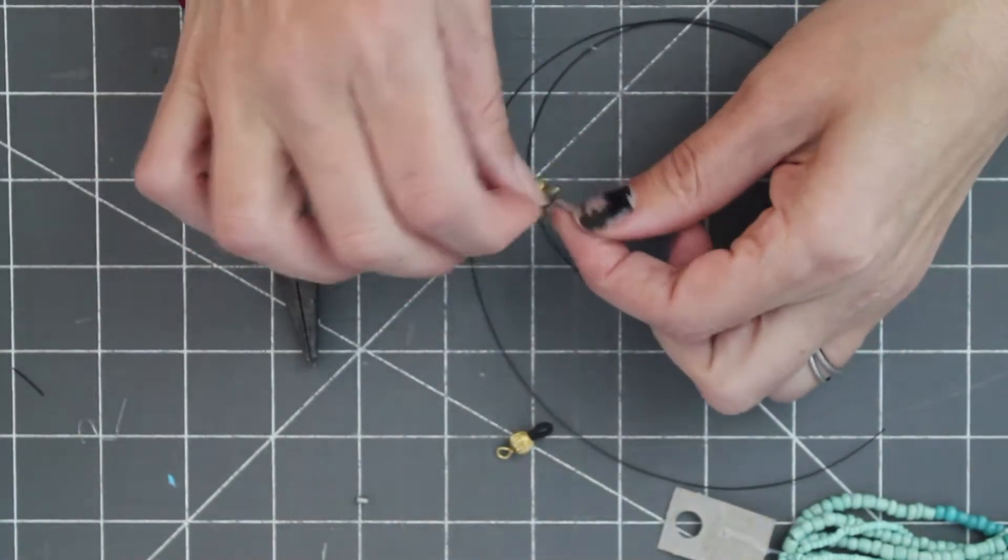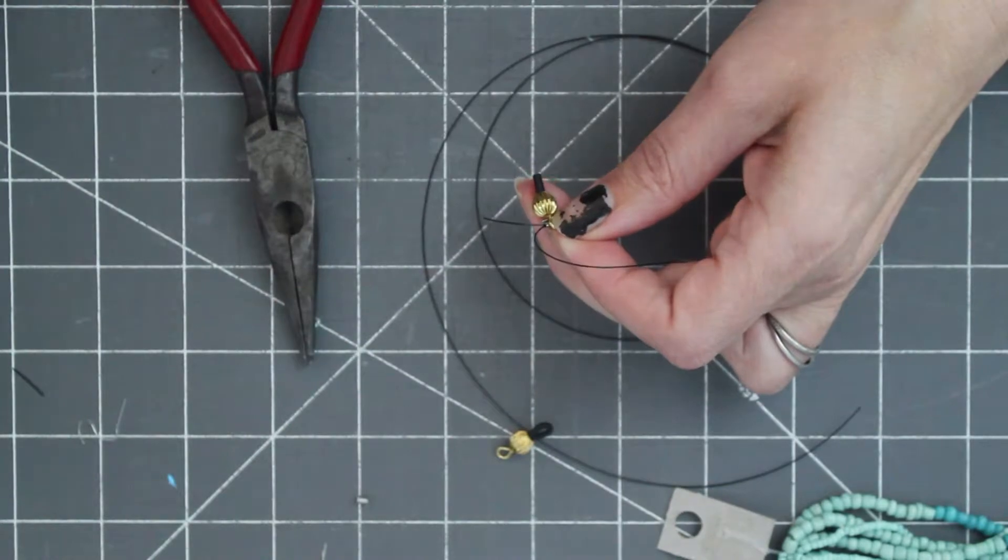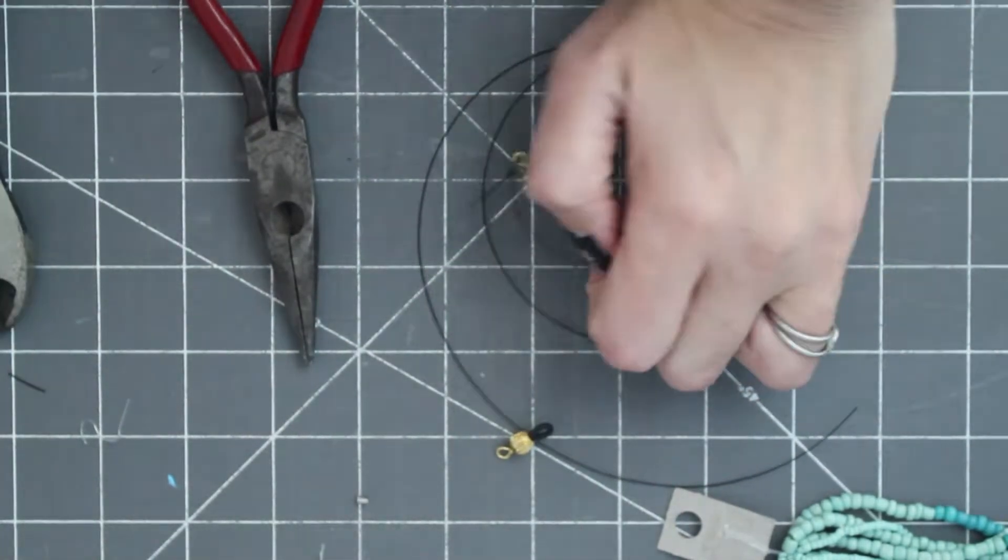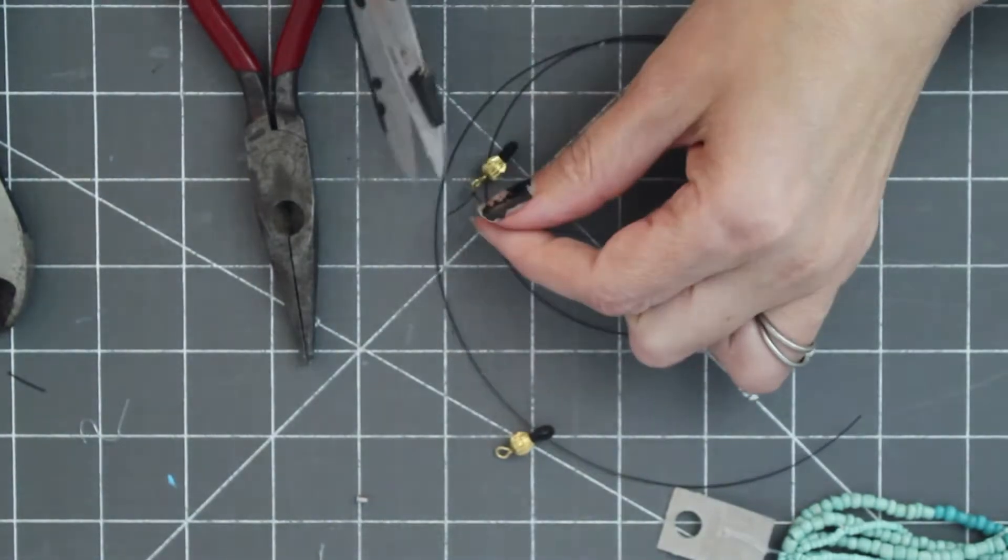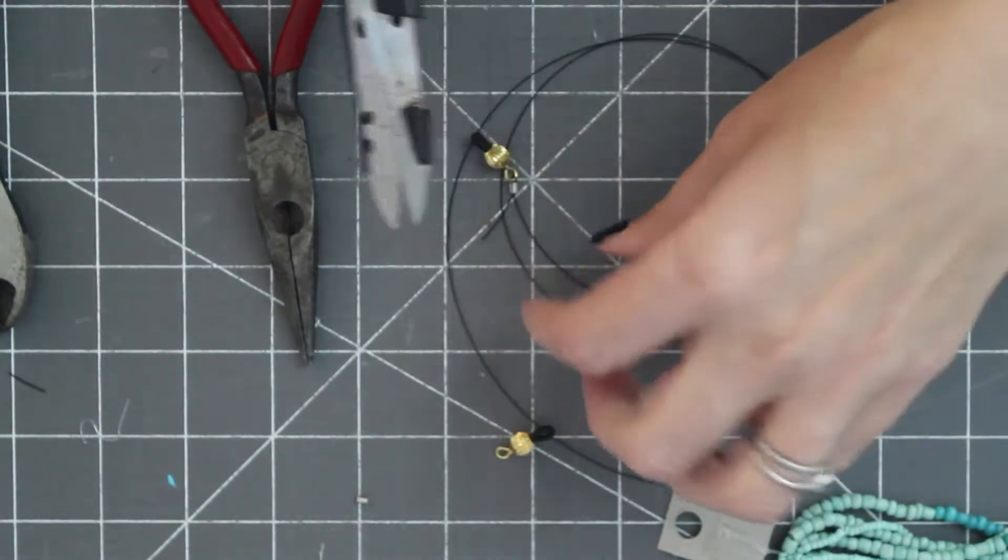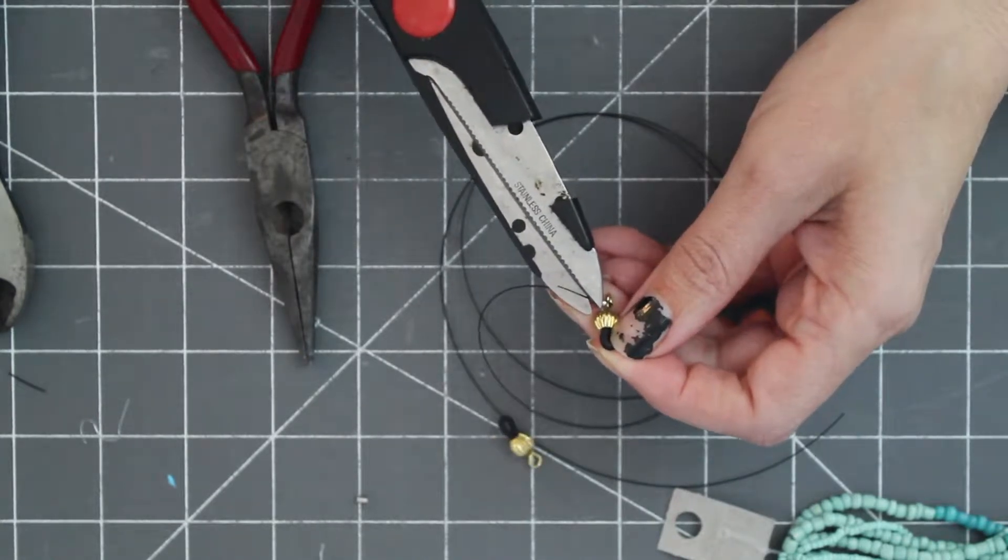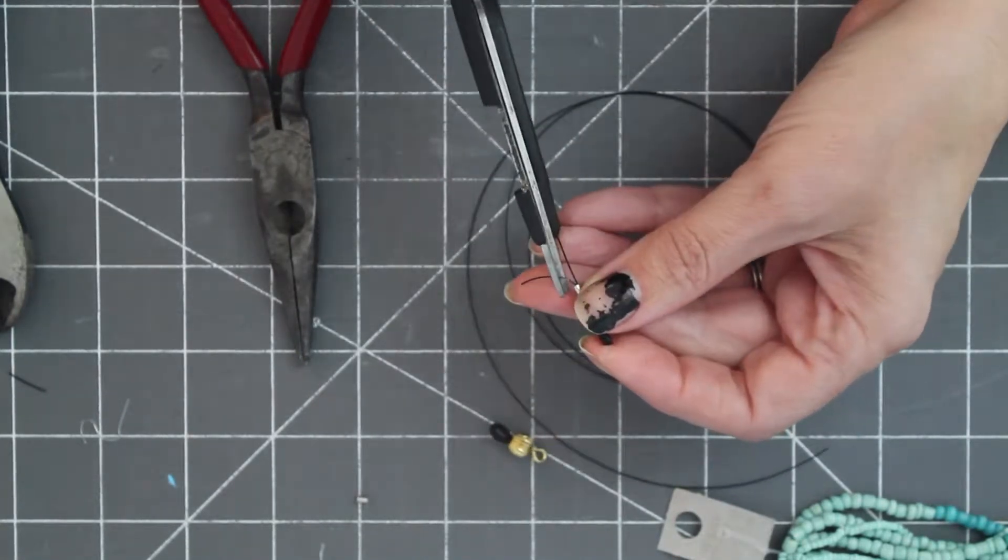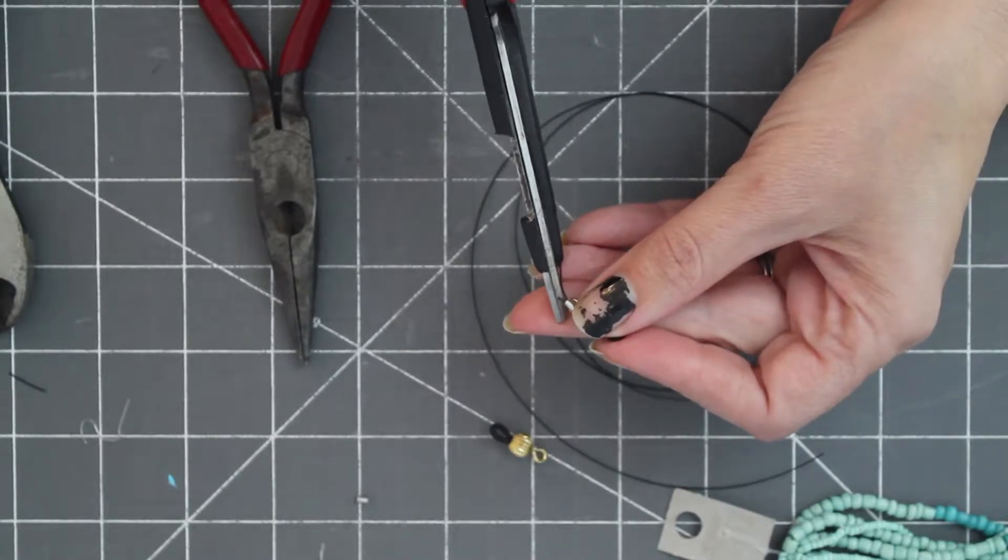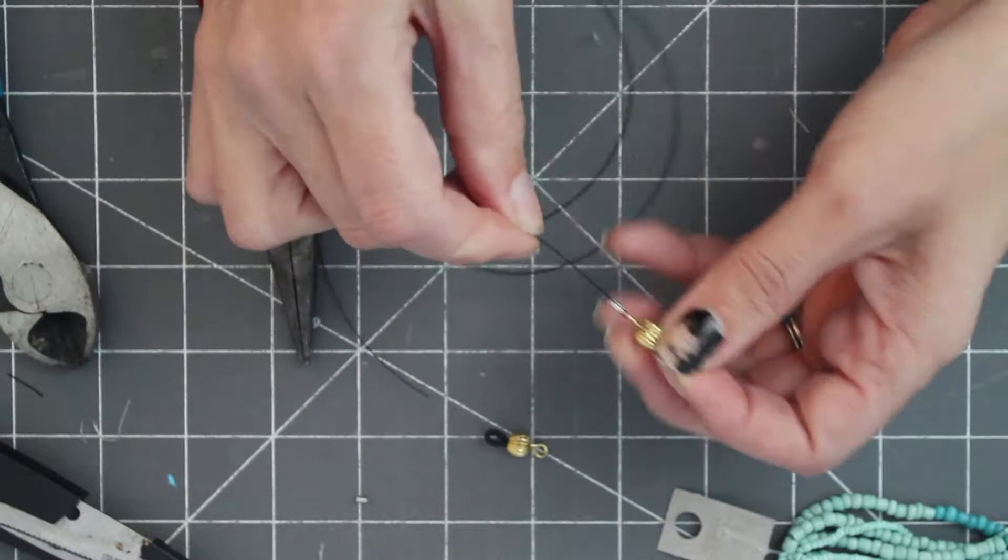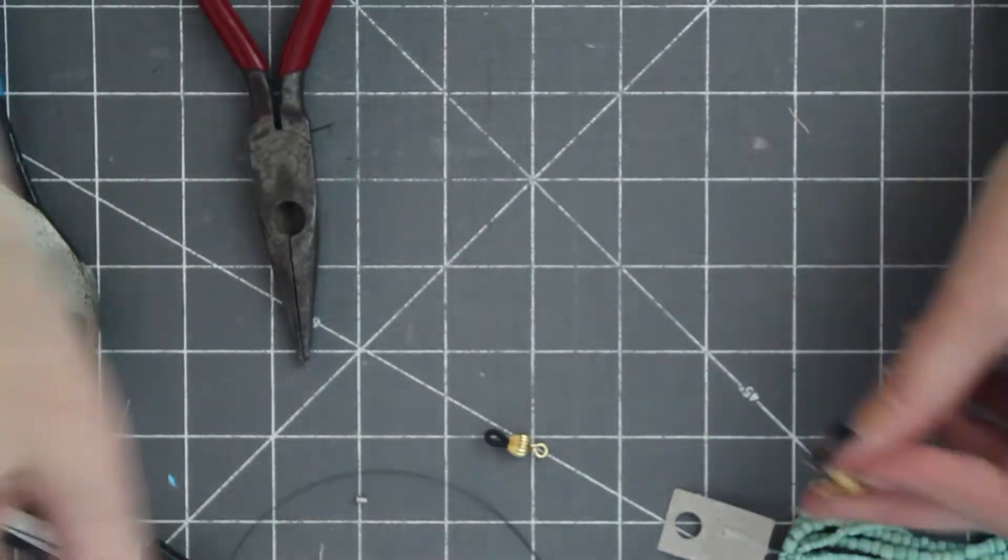And then this excess, you can clip off. You know what? I'm going to use scissors. I'll show you scissors do work on this. This is just all purpose scissors that are kind of beaten up. See, it doesn't cut as easily as the wire cutters, but it still cuts. Okay, now for the beading.